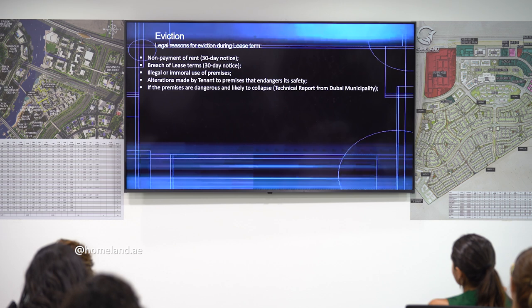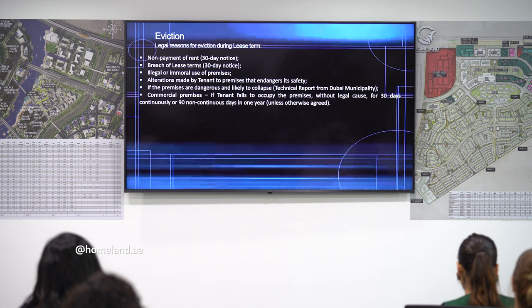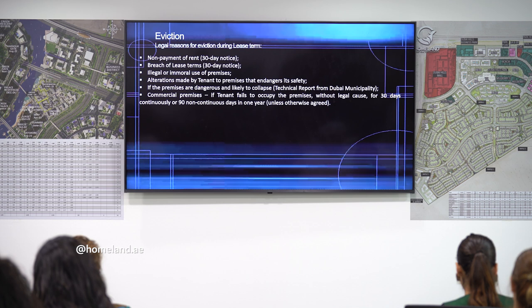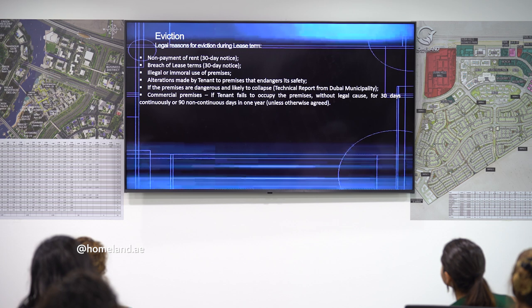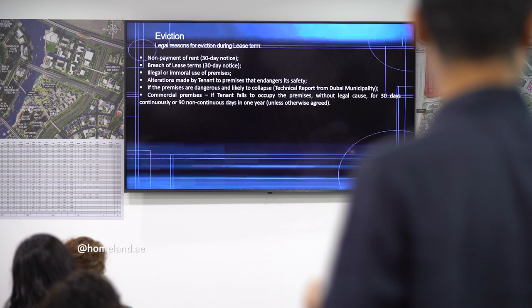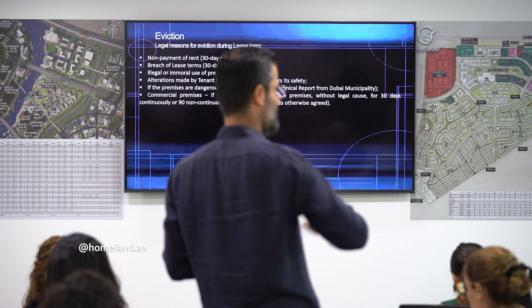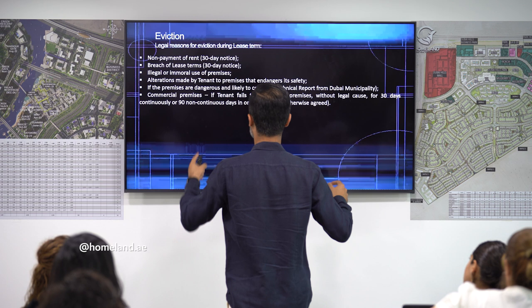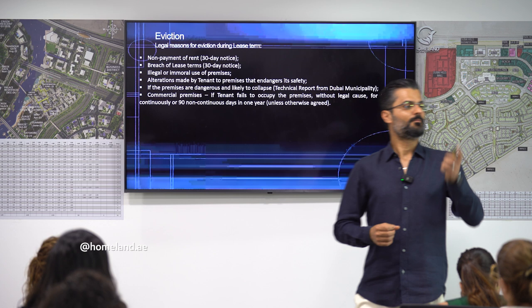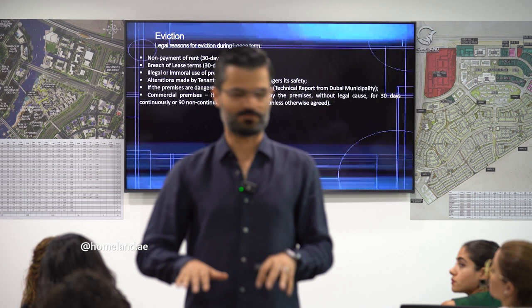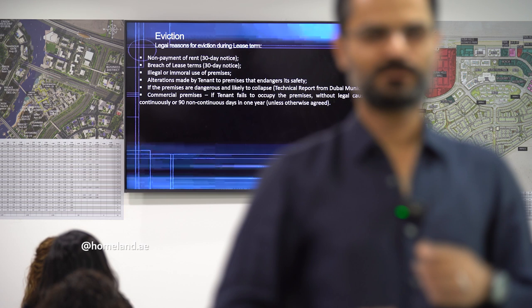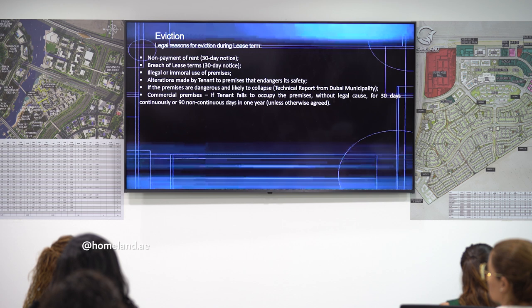For commercial properties: if the tenant does not occupy the shop for 30 continuous days or 90 non-continuous days during the year, the landlord can evict them. Even if the tenant has paid the full year's rent upfront, leaving a commercial property vacant for those periods is grounds for eviction, because keeping a commercial property closed depreciates its value. A commercial property should always be open and active.